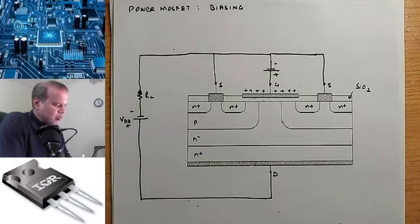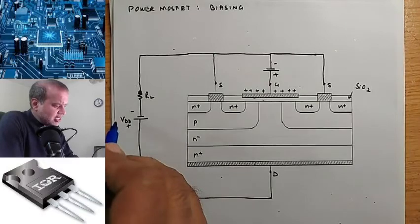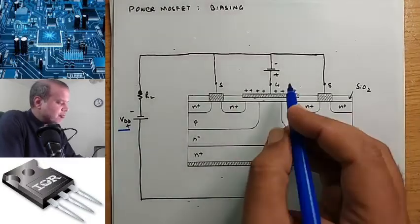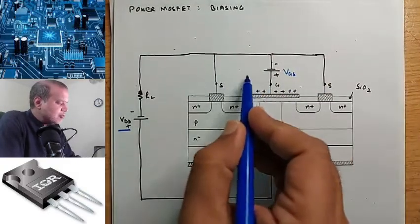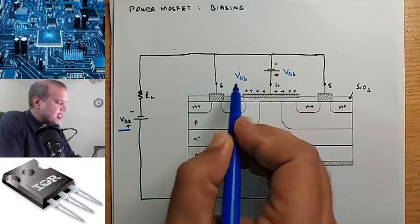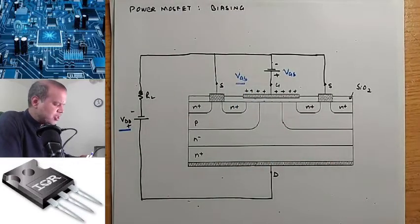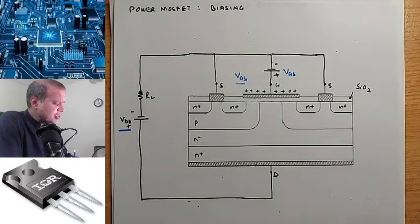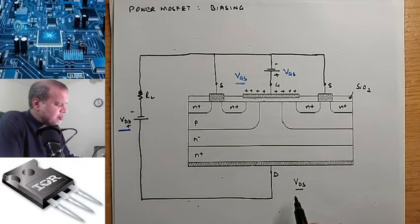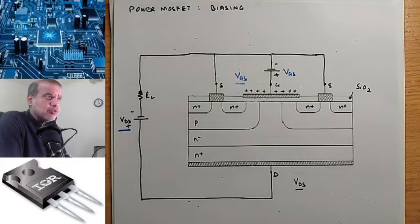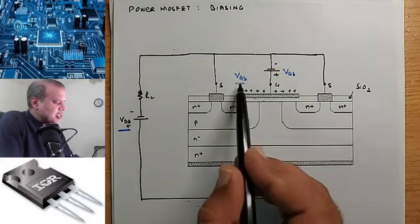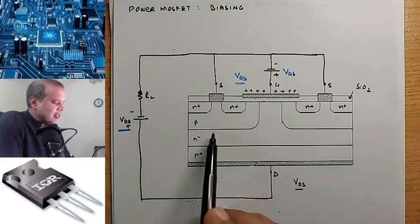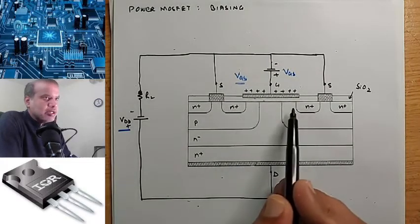We can see the circuit with the source VDD, and on the input side we can see the source called VGS, which is basically the gate-to-source voltage. This is very important. Another one is VDS voltage, which are important voltages in different regions. The gate-to-source voltage is applied to the P-body region within which a channel is induced.